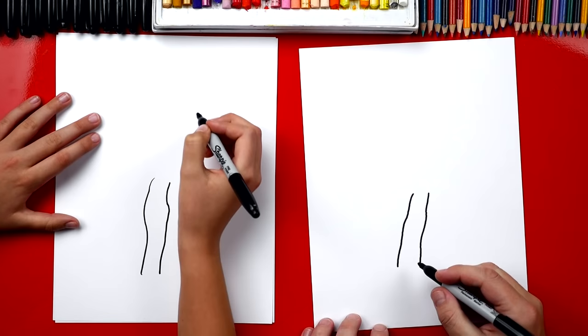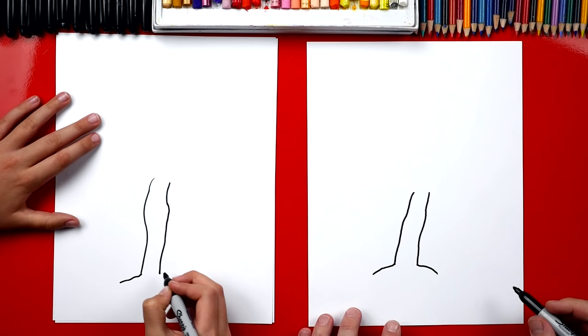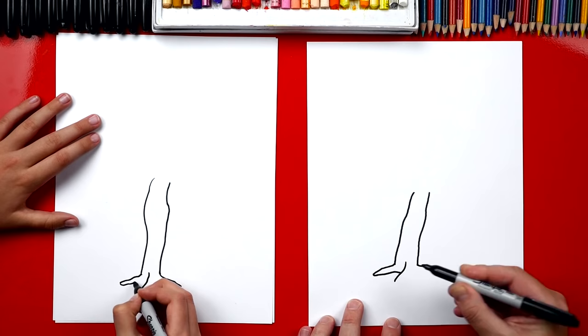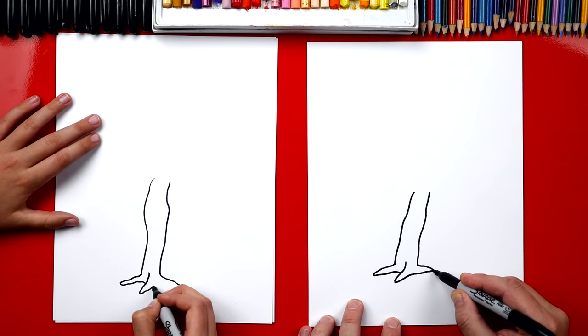Now at the bottom, let's draw the roots. We're gonna draw part of the root that comes out on each side. And if we want, we could also draw another root right down the middle. Okay, now let's connect everything. We're gonna start over here, we're gonna come over, connect to that line. And then this one, we're gonna connect over to this other side.